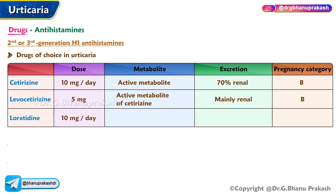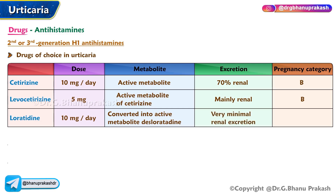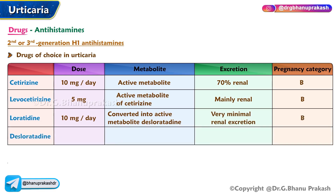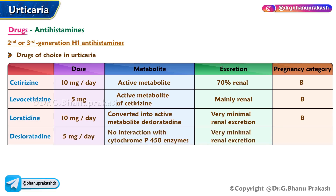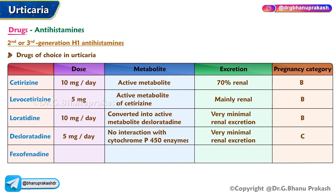Loratadine dose: 10 milligrams per day; converted into the active metabolite desloratadine, very minimal renal excretion, pregnancy category B. Desloratadine dose: 5 milligrams per day; shows no interaction with cytochrome P450 enzymes, very minimal renal excretion, pregnancy category C.